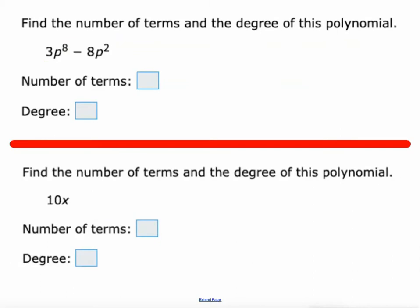All right, same directions here. Find the number of terms and the degree. This has just got two terms. Those terms are 3p⁸ and negative 8p². So two terms. Its degree: biggest exponent, eight.